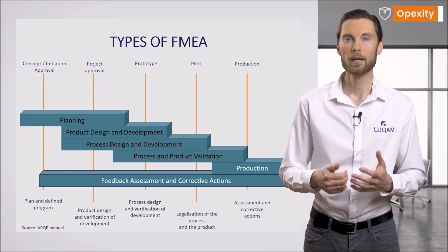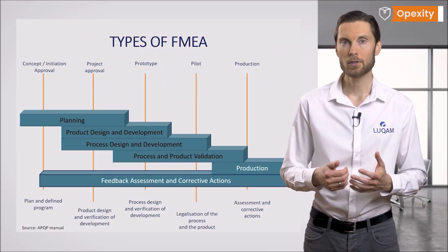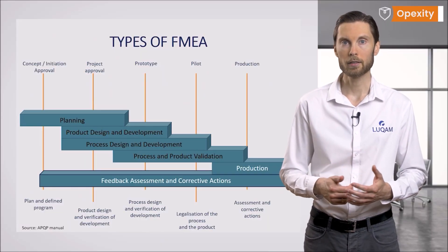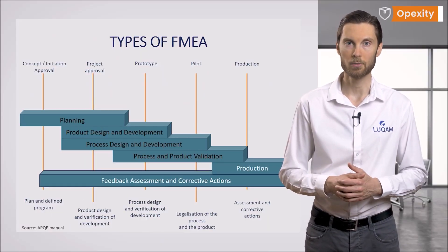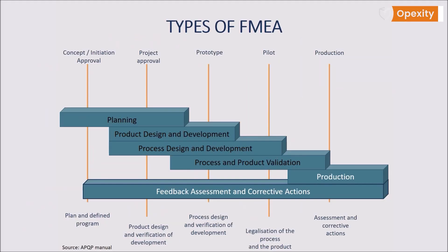The whole idea consists of designing the product and the production process at the same time. The concept of simultaneous design is presented in the Advanced Product Quality Planning (APQP) manual, which provides guidelines for creating a product and process.